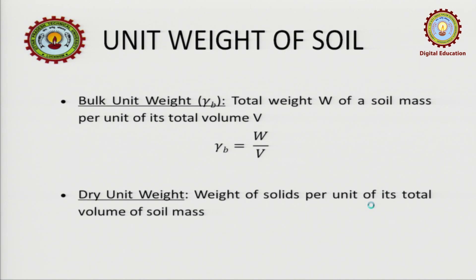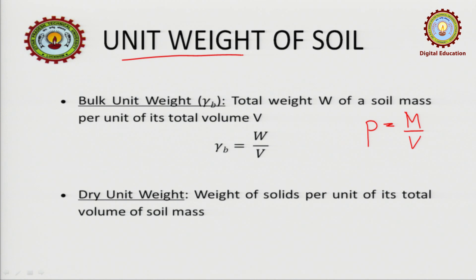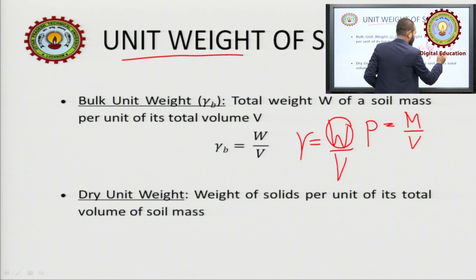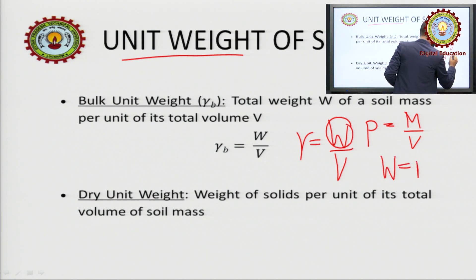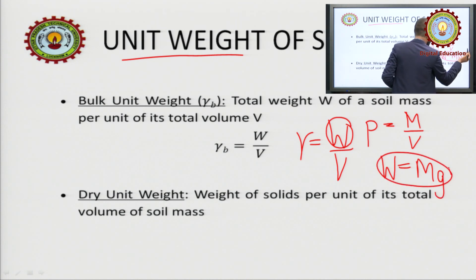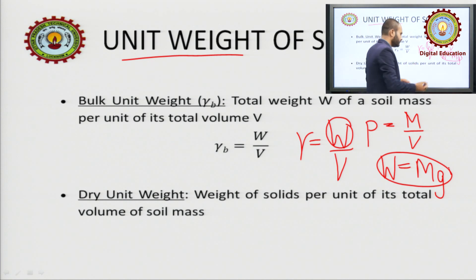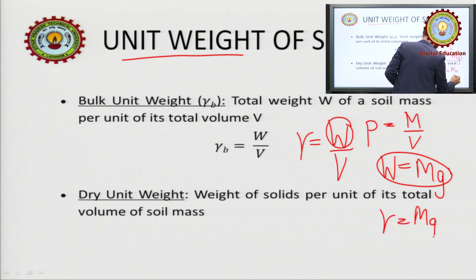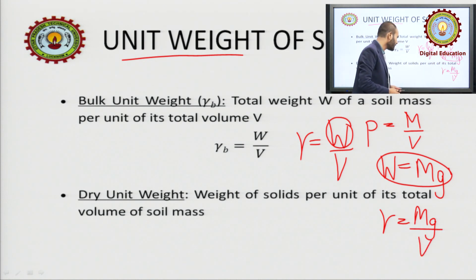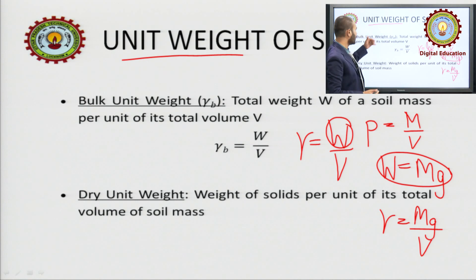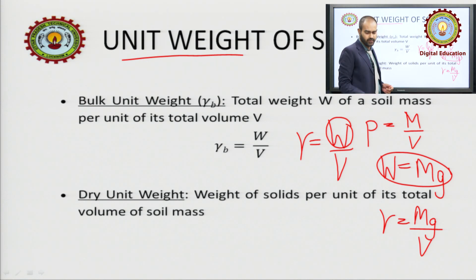Unit weight — density was rho, which was m upon V. Unit weight is represented by gamma and it is W by V, where W is the weight. Weight is mass times gravity, so W equals mg. Therefore gamma can be written as mg by V. The first type is bulk unit weight, represented by gamma-b or gamma-t: it is the total weight of the soil mass to the total volume, W by V.